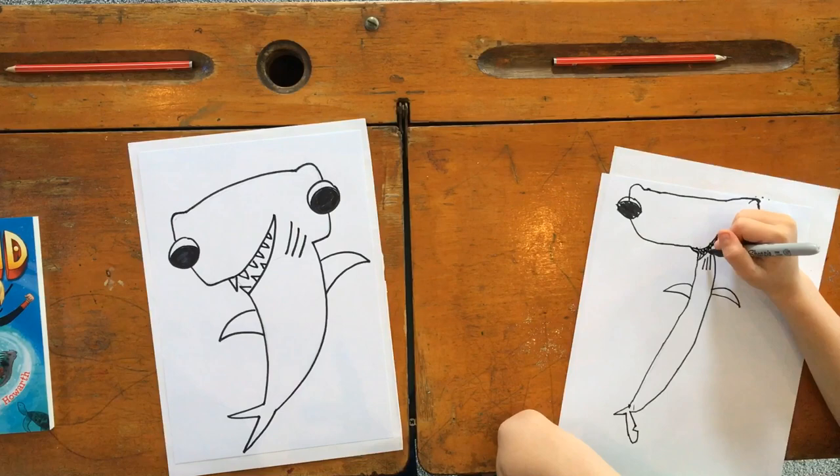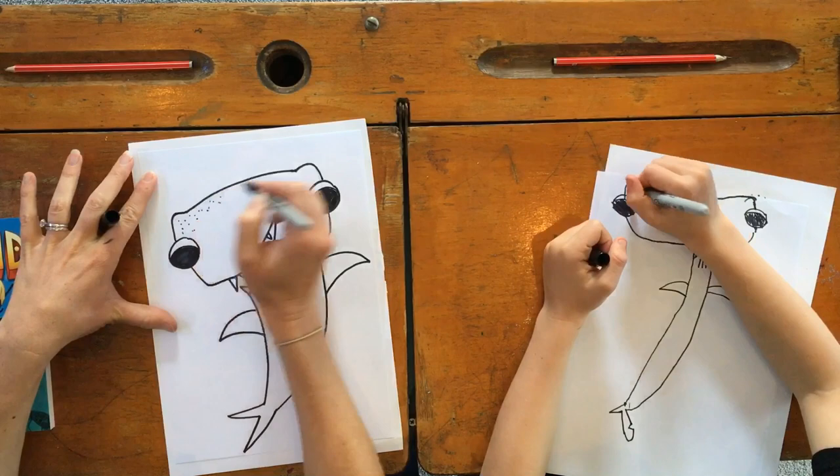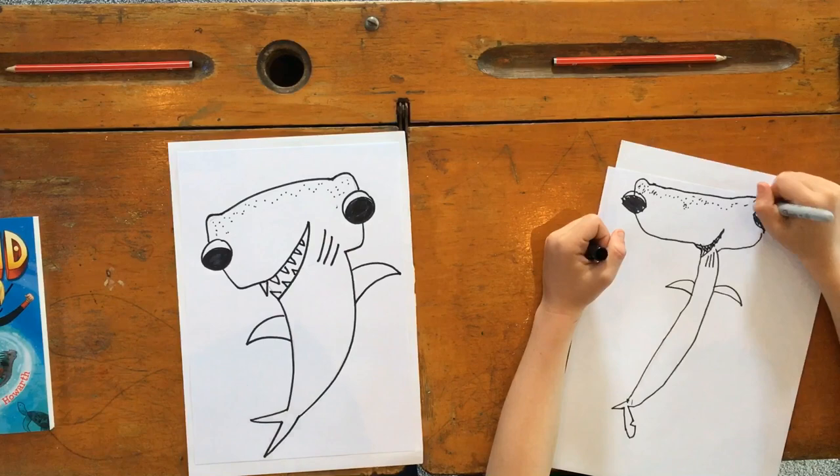Okay. And now hammerhead sharks have these special little holes in the top of their head where they can sense their prey. So let's do some dots for those holes. Lots of little dots just around his head. Great job, Bo.